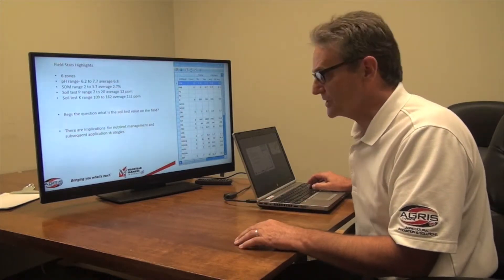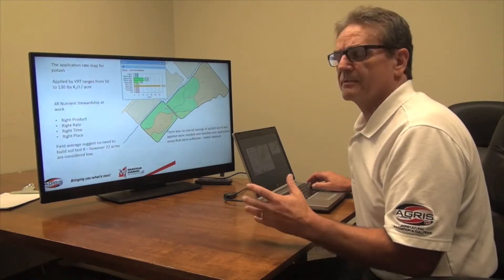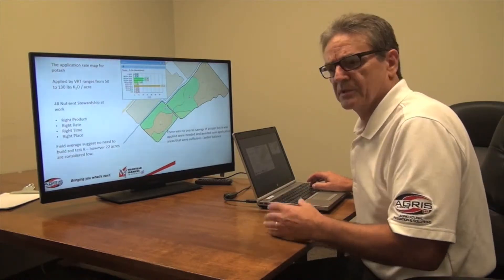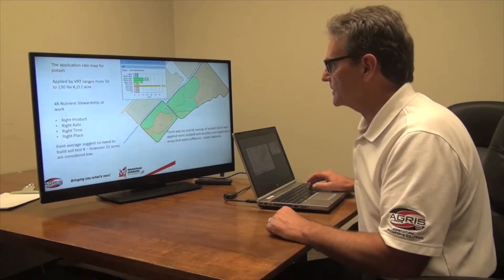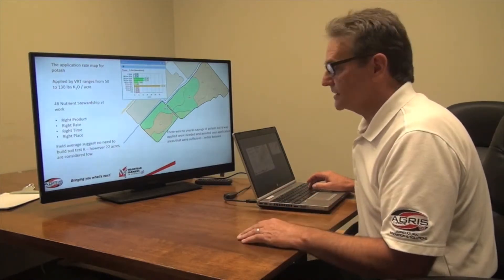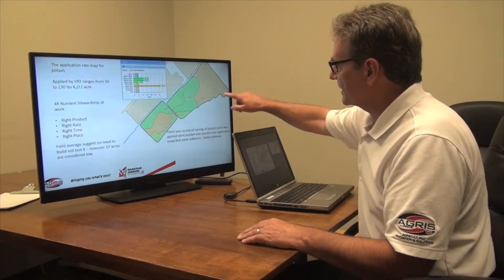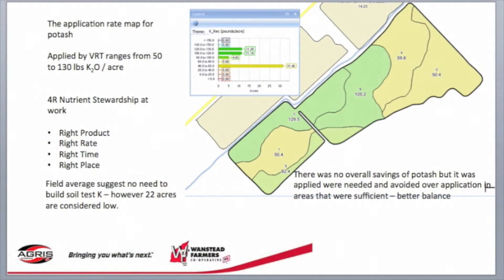My yield maps are saying I've got differences in yields there as well. So now I can start to create some strategies around how would I apply my fertilizer. This is an application map for potash. It was created in the GIS using the tools of both the yield map and the soil test data to do a build and maintenance approach. I can see I've got areas that are basically crop maintenance at 50 pounds of potash, and I've got some areas where I'm starting to address the low or short areas in the field with a little more potash. The field average suggests that I don't need to build any more soil test K at 132 parts per million, but I do have 22 acres there that are not up to where we want them to be. So while I created no overall savings for potash, I have put it in the right spot where it's needed.